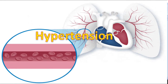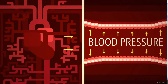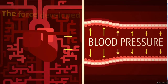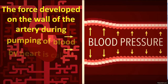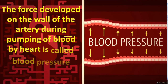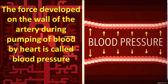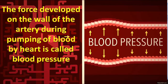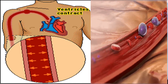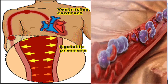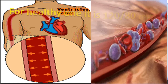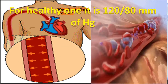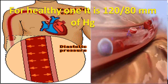Hypertension. The force developed on the wall of the heart during pumping of blood by the heart is called blood pressure. For a healthy person, it is 120 by 80 mm of Hg.